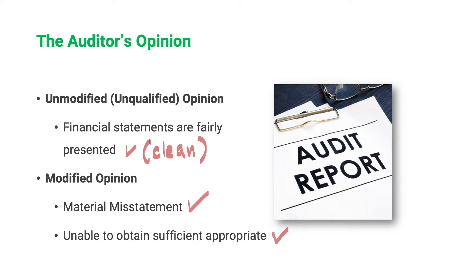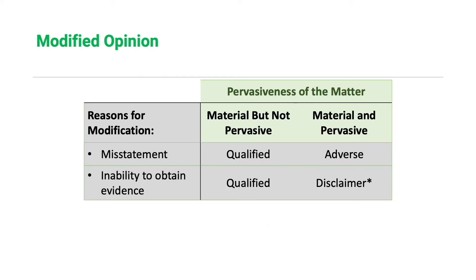These types of opinion are communicated through the auditor's report. As for the types of modified opinion, we have the qualified opinion, adverse opinion, and disclaimer of opinion. The auditor will issue a specific type of modified opinion — whether qualified, adverse, or disclaimer — depending on two factors: the reason for modification and the pervasiveness or significance of the matter.